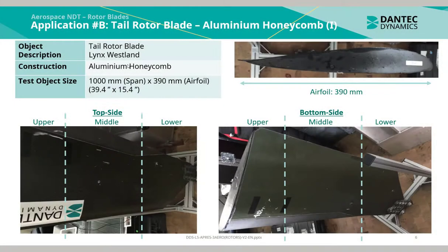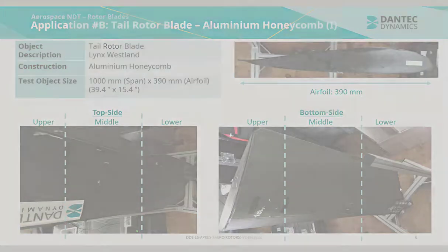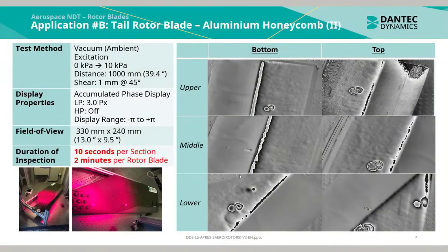This application is of a tail rotor blade of an aluminium honeycomb construction. The test object size is approximately 1m in span-wise length by 390mm in the airflow direction. This inspection was taken in three sections from the top side and three sections of the bottom side, using vacuum ambient excitation from a pressure jump from 0 to 10kPa.